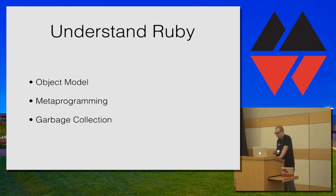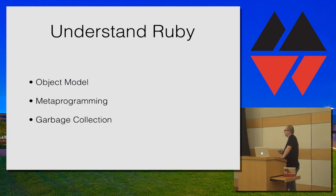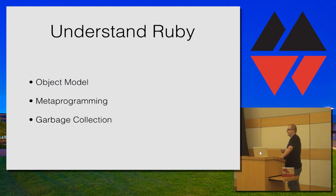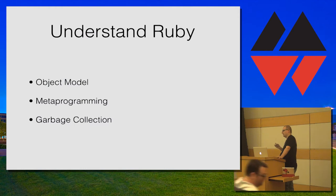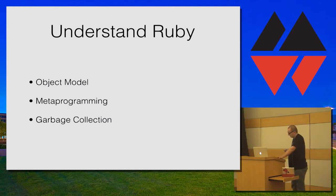One of the main reasons why you want to look at the CRuby source code is to actually understand Ruby better. If you code in Ruby for a couple of years and you read a metaprogramming book or a couple of blogs about the object model, I think that's not enough. If you want to really understand how objects work, how metaprogramming works, how singleton methods work, the best way is to look at the C source code. And of course if you want to learn more about garbage collection, that's pretty much the only way you can learn about it.